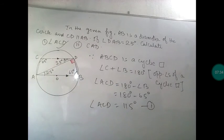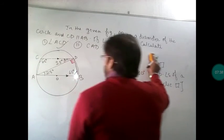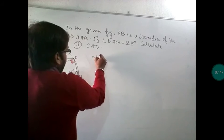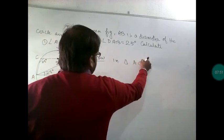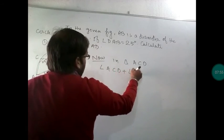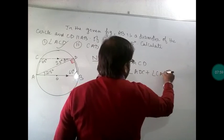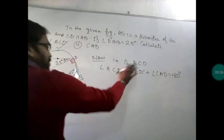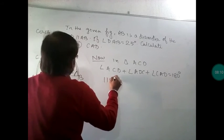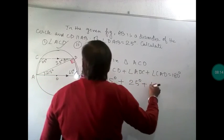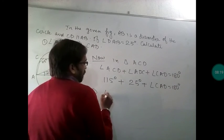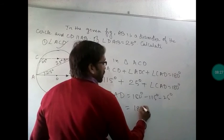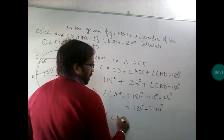For the second part, we find angle CAD by going into triangle ACD. In triangle ACD: angle ACD plus angle ADC plus angle CAD equals 180 degrees. We have 115 degrees plus 25 degrees plus angle CAD equals 180 degrees. That means angle CAD equals 180 minus 140, which equals 40 degrees.